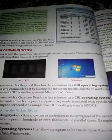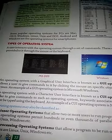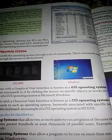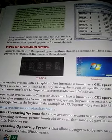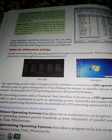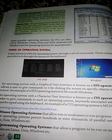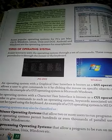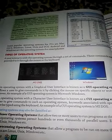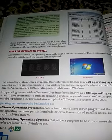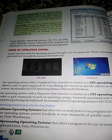Graphical User Interface, known as GUI: A GUI operating system allows the user to give commands by clicking the mouse on specific objects or icons on the screen. An example of a GUI operating system is Microsoft Windows, which is a graphical user interface operating system.